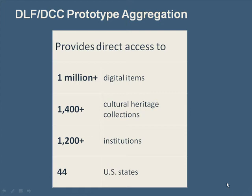What's in it for you? The aggregation of collection and item-level metadata that underlies our DLF-DCC beta sprint prototype is a refined version of the Institute of Museum and Library Services' Digital Collections and Content resource. To give you some sense of the scope of the resource, some raw numbers: it contains more than a million digital items from between 14 and 1,500 diverse cultural heritage collections at institutions in 44 states.